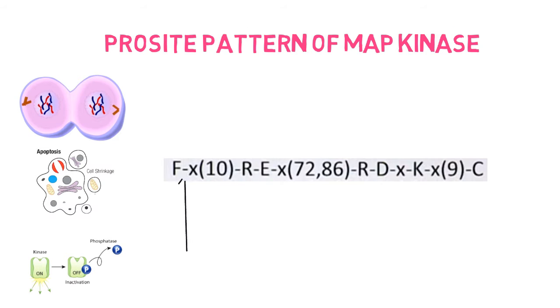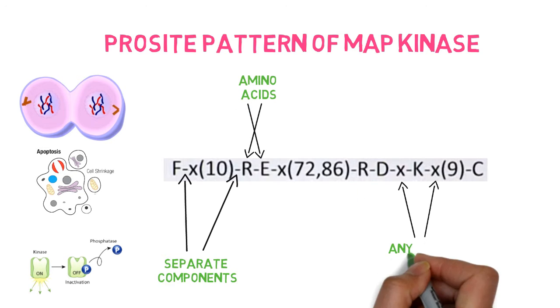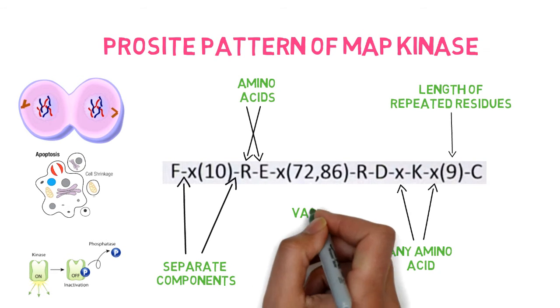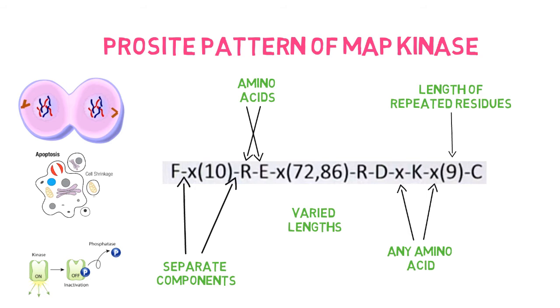A hyphen divides the pattern's elements. Each letter stands for an amino acid. X could be any amino acid. The numbers in brackets indicate how long an amino acid residue repeats. The range of the variation is displayed in the bracket if the length is variable.